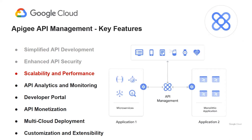The next feature is scalability and performance. Apigee API management is built on a scalable and high-performance platform, enabling organizations to efficiently handle a large number of API requests. It has features such as caching, load balancing, and throttling that optimize API performance, ensuring reliable and responsive APIs even under high loads. In this architecture, Apigee API management is able to load balance requests and send those requests to microservices and monolithic applications based on the load.